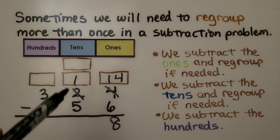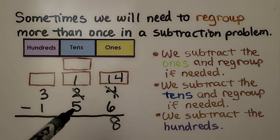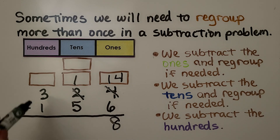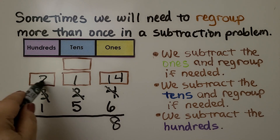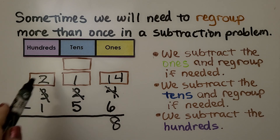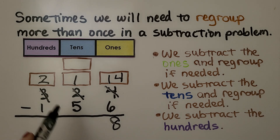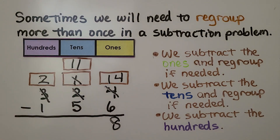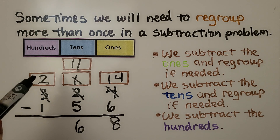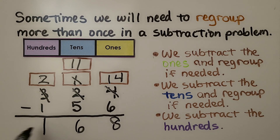Now we have one ten and we need to take five tens away, and we can't — we don't have enough tens. So we go to the hundreds place, cross off this three hundred, and it becomes a two hundred. We give that hundred to the tens place as ten tens. Now, instead of one ten, we have eleven tens. Eleven tens minus five tens is six tens. We have two hundreds minus one hundred, that's one hundred. The answer is equal to one hundred sixty-eight.